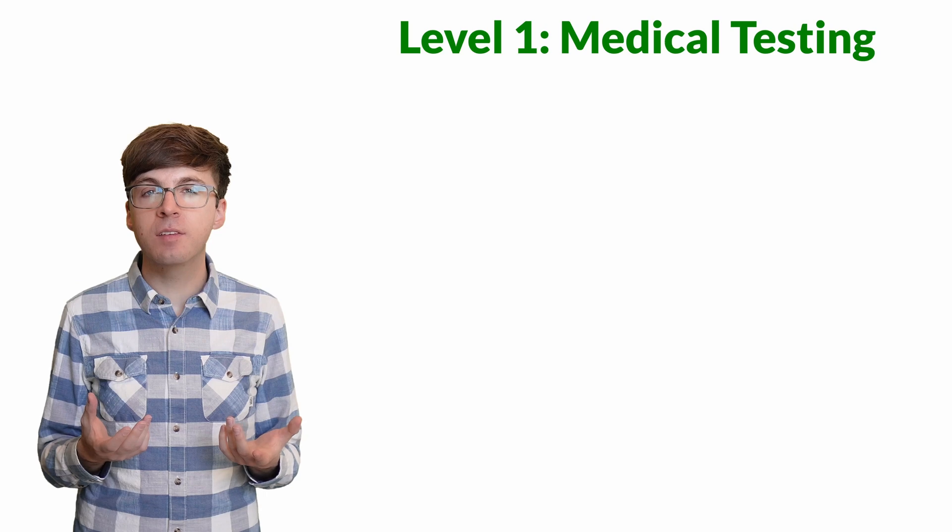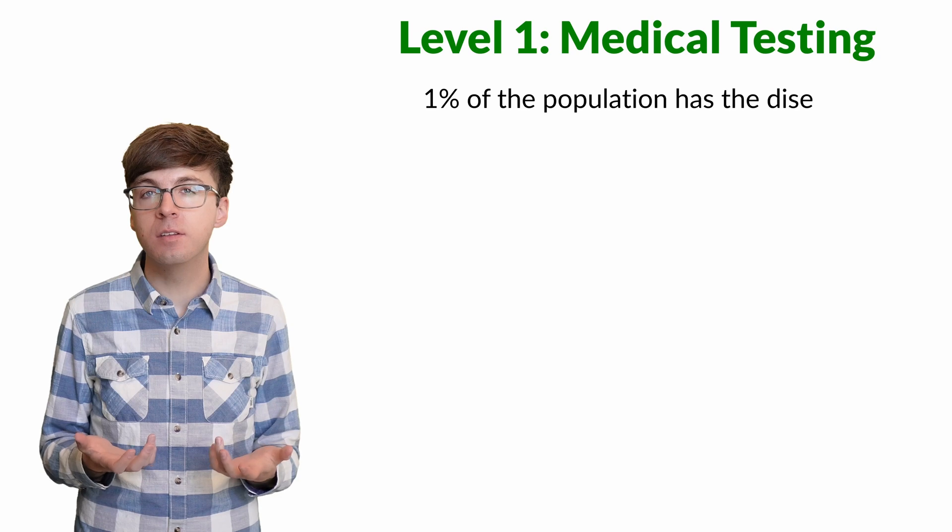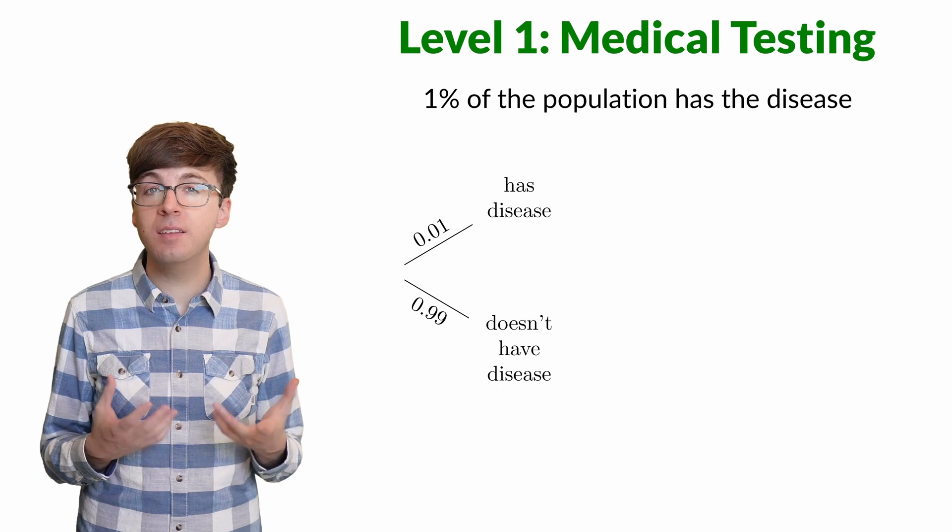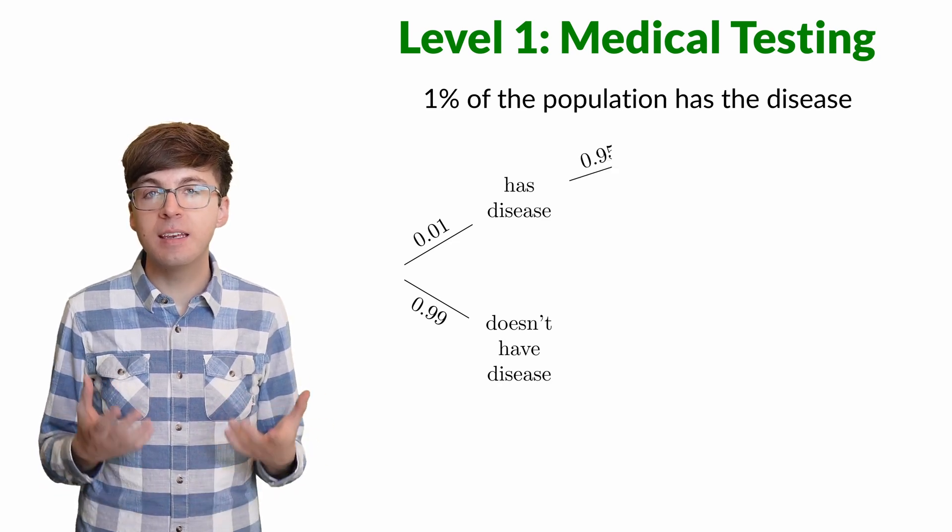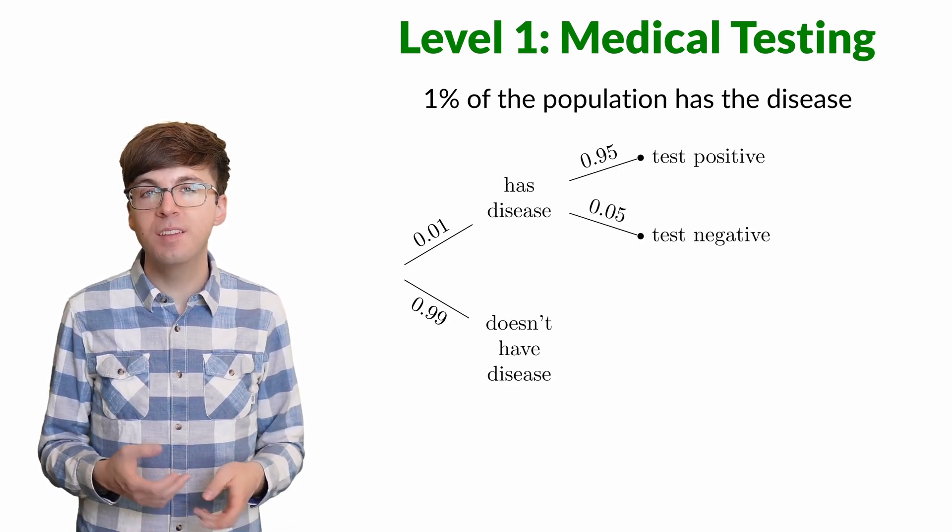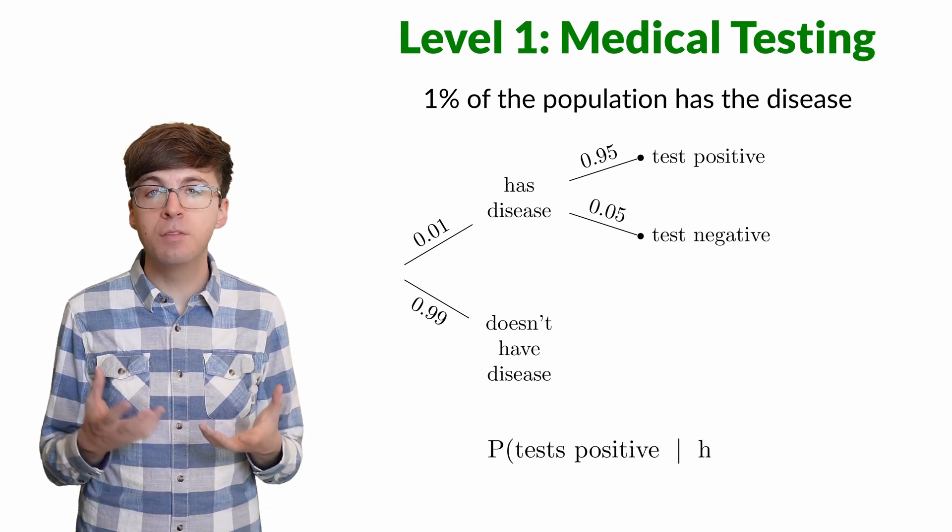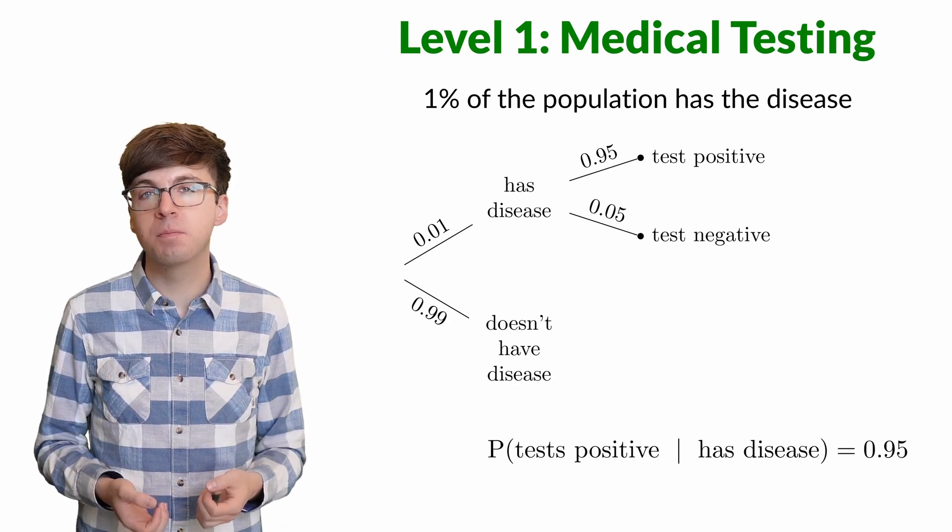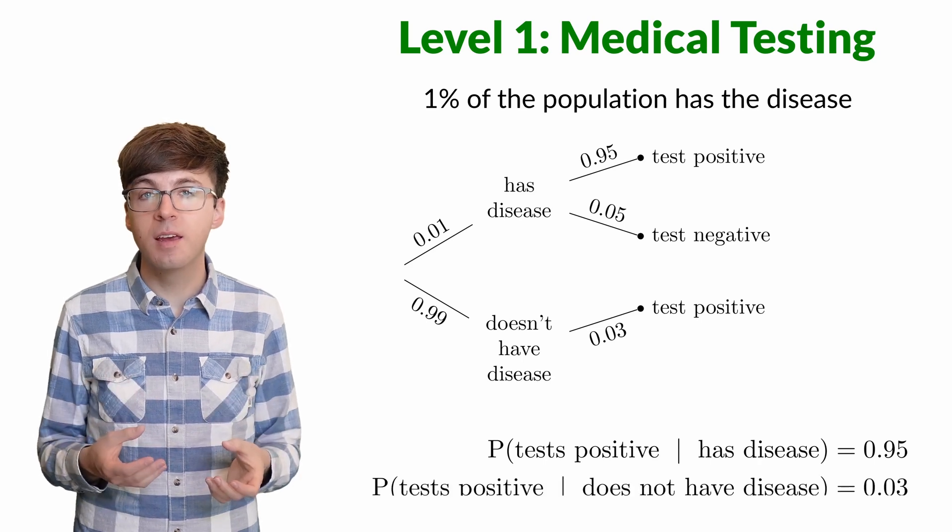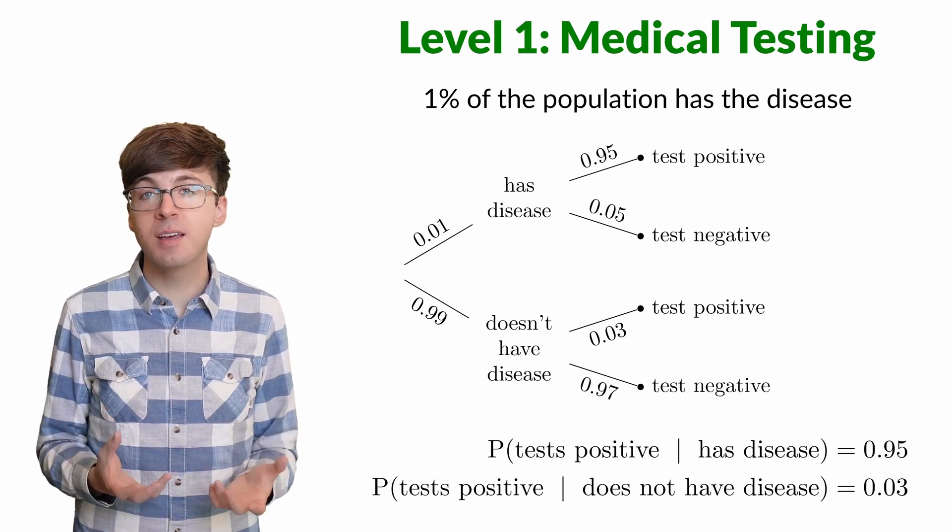For level one, let's look at medical testing for a disease. Say 1% of a population has this disease and a screening test is available. Out of those with the disease, the test is positive, indicating the disease 95% of the time, and it gives a false negative the other 5% of the time. This is a conditional probability. The probability someone tests positive given that they have the disease is 95%. For those without the disease, the probability of testing positive is 3%, and the probability of testing negative is 97%. This seems like a pretty accurate test.